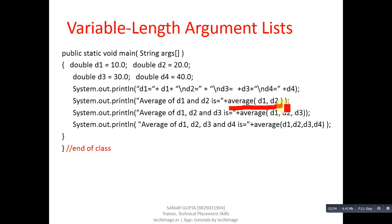So this average function will receive these two values and it will return average of these two variables. Then again in println function I have called average function. This time I have passed three arguments.